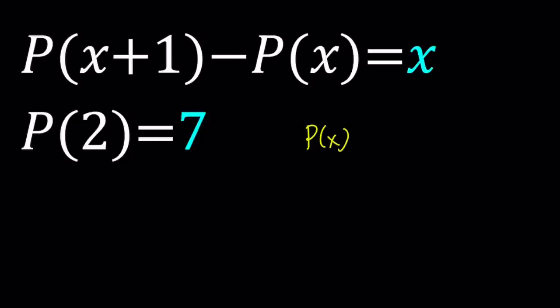If P of X is linear, like P of X equals 3X, let's say, then P of X plus 1 is just going to be 3X plus 3. You're going to replace X with X plus 1. And then their difference is going to be a constant, not X.